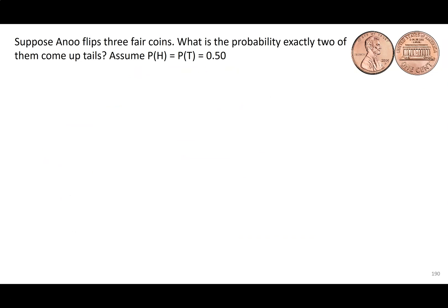Here's a quick example. Anu has three fair coins. We want to know: what's the probability that exactly two of those three coins come up tails? Just for familiarity — heads is the side of the coin with a face on it, and tails is the other side. The first step is to write out all the possibilities — write out my sample space.